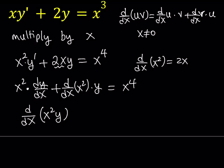Let's double check to make sure we got it right. If you differentiate x squared y, you get the derivative of x squared, which is 2x, multiplied by y, plus the derivative of y, which is y prime, multiplied by x squared. And that's exactly what we have. So this is true on the left-hand side, and on the right-hand side it equals x to the fourth power.